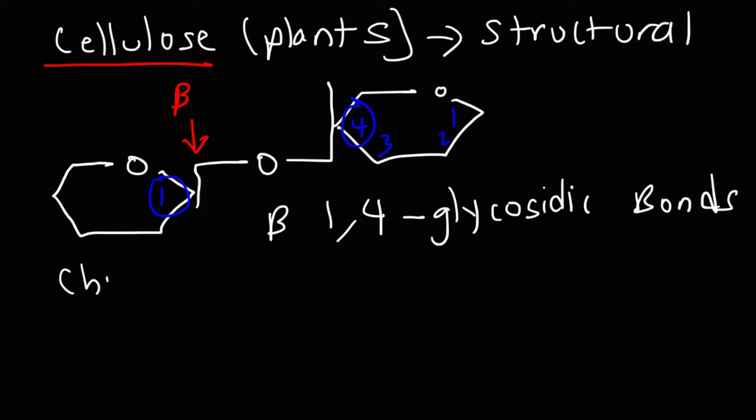Another polysaccharide that you might be tested on is chitin. Chitin is similar to cellulose, but it's found in insects as opposed to plants. And it has a structural function as well, as opposed to energy storage.